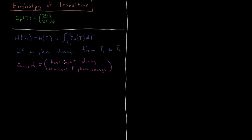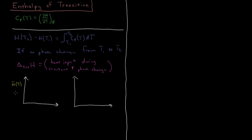So the heat that we have to input into a substance in order to get it to undergo a phase transition is this enthalpy change of that transition. Let's make a graph here of both the heat capacity and the enthalpy. On this first graph we are going to have the molar enthalpy as a function of temperature minus molar enthalpy at T equals zero. And on the second one, let's plot the molar constant pressure heat capacity Cp(T) — that's the heat capacity divided by the number of moles, making it an intensive property.